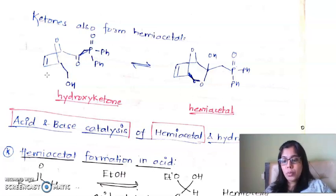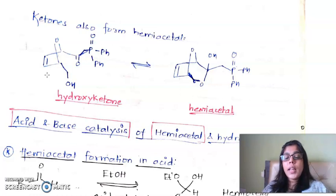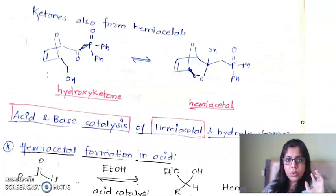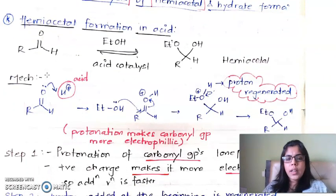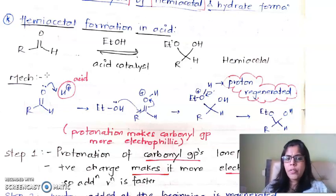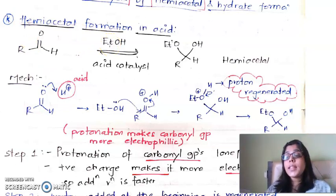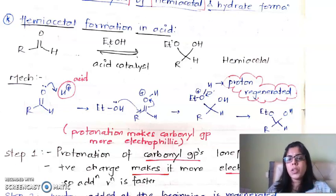The hemiacetal reaction can also be understood through acid and base catalysis — the same applies to hydrate formation. There are two ways: acid catalysis and base catalysis. In acid-catalyzed hemiacetal formation, previously we had only aldehyde and alcohol. Now, to increase the rate of reaction, an acid catalyst is added. The acid provides H⁺ ions, and we need to see what this H⁺ does for us.